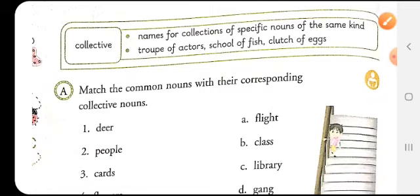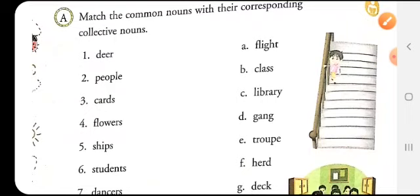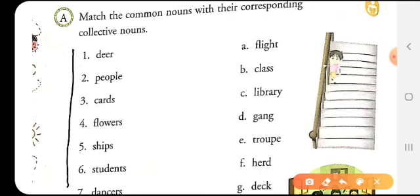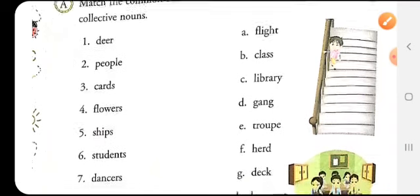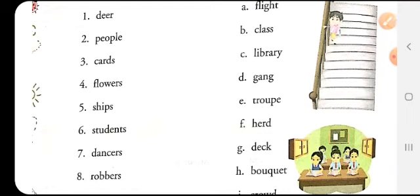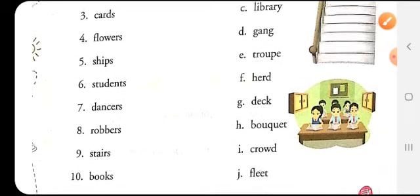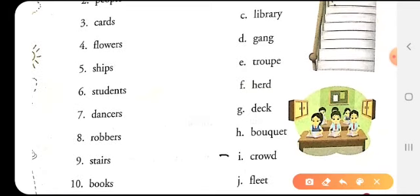Now children, let's do an exercise. Here we have the names of some common nouns and in this column we have the collective nouns for them. Let's do it. Now the first we have is the deer. So for deer, we have herd of deer. Then we have people. So the collective noun for people is crowd. For people, the collective noun is crowd.